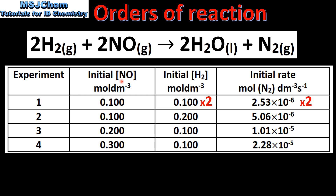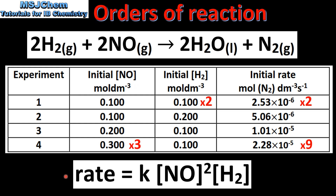Next we look at nitrogen monoxide. In experiments 1 and 4, the concentration of nitrogen monoxide is tripled and the concentration of hydrogen remains constant. Comparing the rate of reaction in experiment 1 and experiment 4, we can see the rate of reaction has increased by a factor of 9. By tripling the concentration of nitrogen monoxide we've produced a change in the rate of reaction equal to the square of the change made to the concentration. That tells us the reaction is second order with respect to nitrogen monoxide. So the rate expression is second order with respect to nitrogen monoxide and first order with respect to hydrogen.